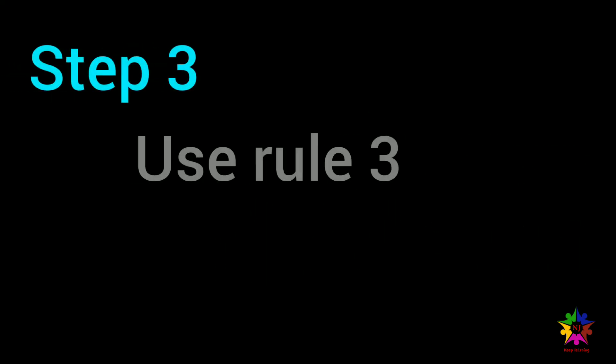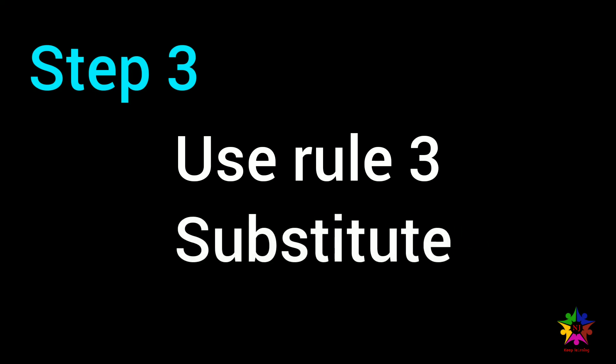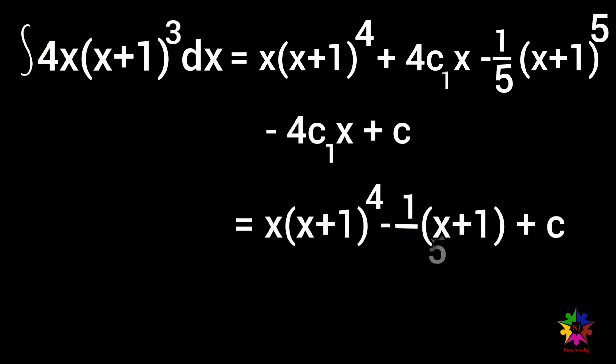Step 3. Use rule 3 to compute the final integral and substitute. Note that the c1 term does not appear in the final solution. Since this is common to integration by parts, c1 will henceforth be assumed equal to 0 and not formally included in future problem solving.